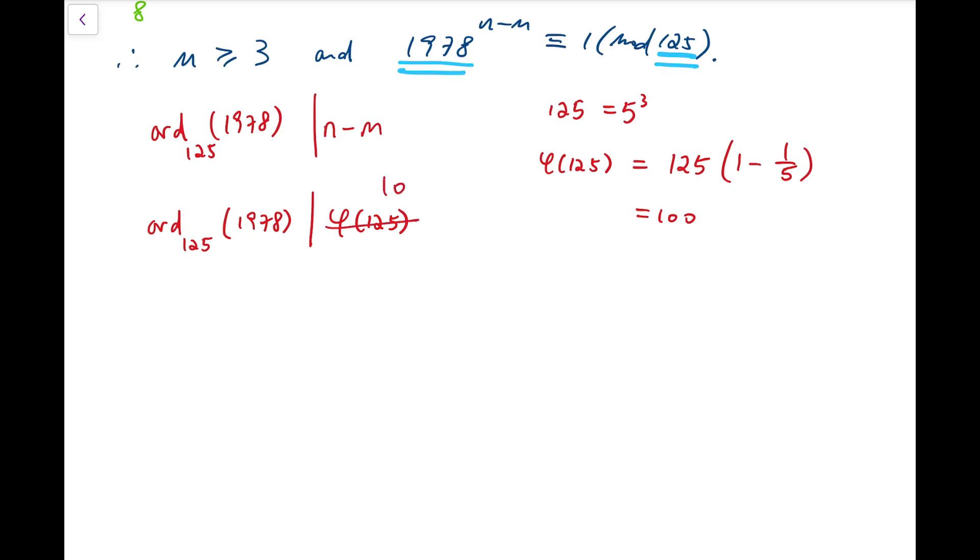So, the order is a factor of 100. And this number can be 1, 2, 4, 5, 10, and 20, 25, 50, and 100. So these are the 9 possible values.